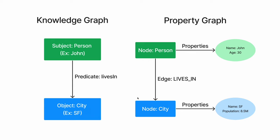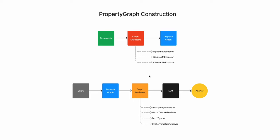Now let's discuss property graph construction and querying. There are two stages: construction and querying. The upper one is property graph construction and the lower one is the querying stage. During construction, this begins with documents and uses graph extractors to build property graphs. There are three types of extractors: implicit path extractor, simple LLM extractor, and schema LLM extractor. Once the property graph is constructed, during the querying stage we use graph retrievers — LLM synonym retriever, vector context retriever, text to cipher retriever, and cipher template retriever — and then pass whatever information we retrieved to the LLM to generate an answer for the given query.